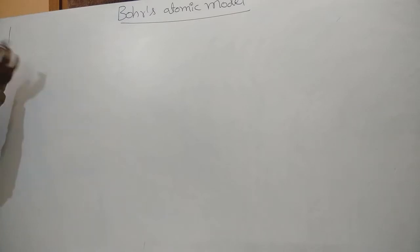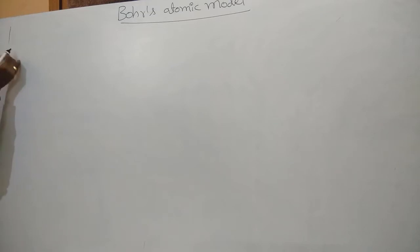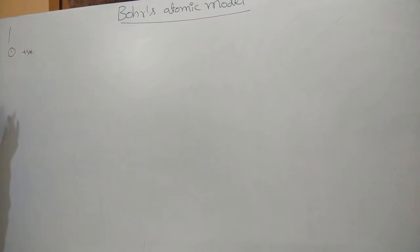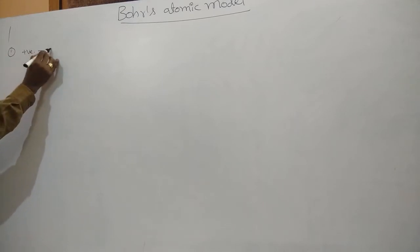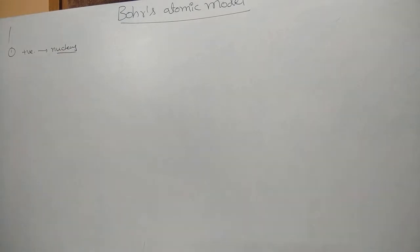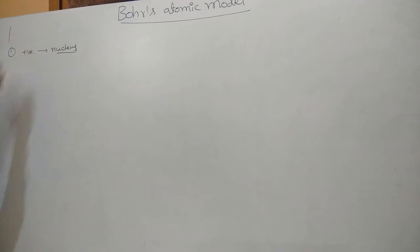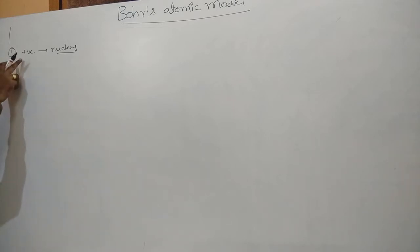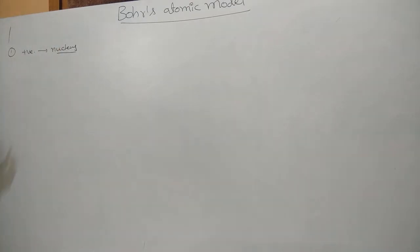Today we are discussing Bohr's atomic model. Bohr has taken two postulates from Rutherford's model. The first postulate, taken directly from Rutherford, is that the maximum amount of positive charges is concentrated at the center of the atom, and that point is named as the nucleus.